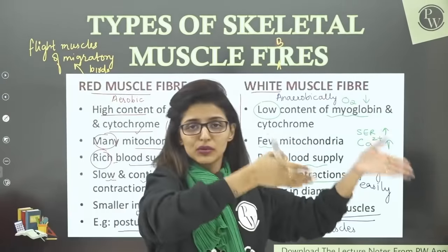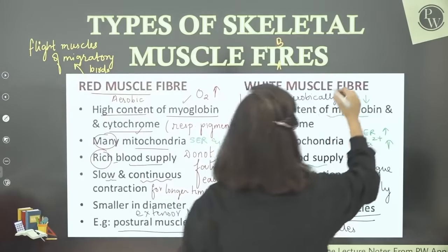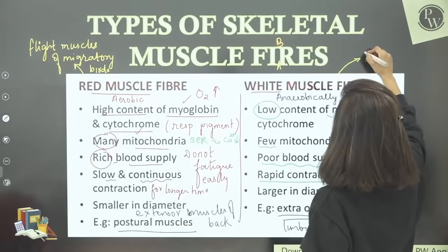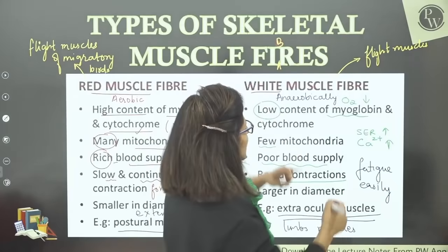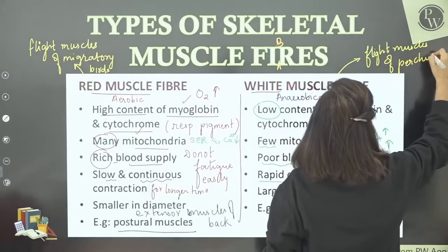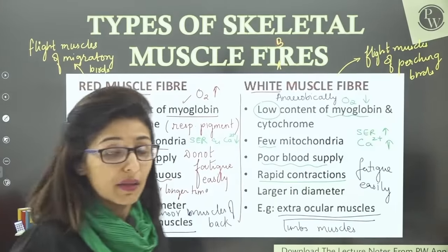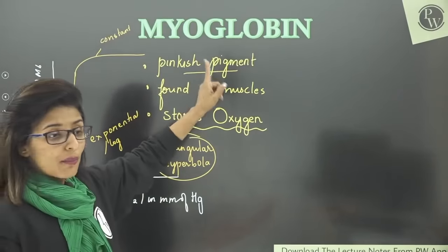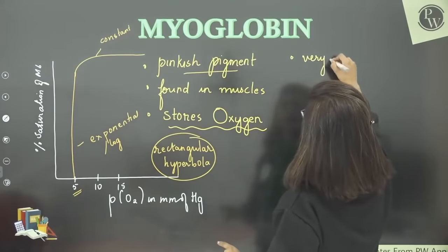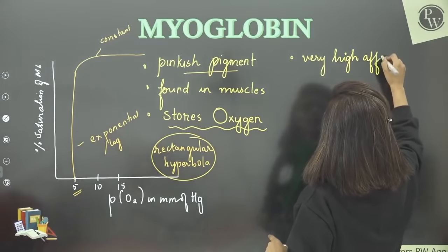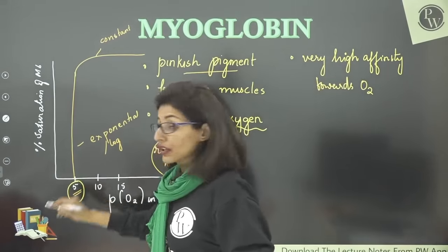There are two types of birds: migratory birds have red muscle fibers in their flight muscles. Perching birds — those that fly a little and then sit from branch to branch — have white muscle fibers in their flight muscles. So flight muscles of perching birds have white muscle fibers, and flight muscles of migratory birds have red muscle fibers.